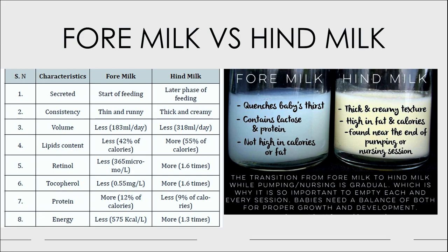The difference between foremilk and hindmilk: foremilk is secreted at the start of feeding and is thin, less in volume, and contains less fat, retinol, and tocopherol, but more protein and less energy. It is mainly for the baby's thirst, containing more water and high lactose. Hindmilk is secreted in the later phase, is thick, more in volume, high in fat, found near the end of the nursing session, and is meant to withstand the baby's hunger for longer.